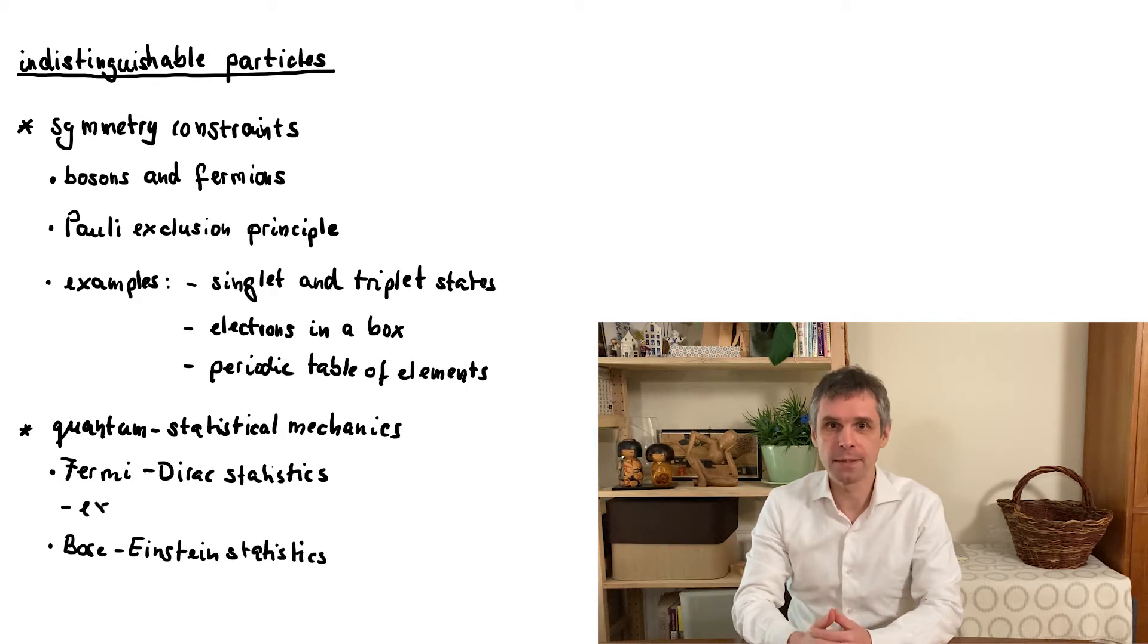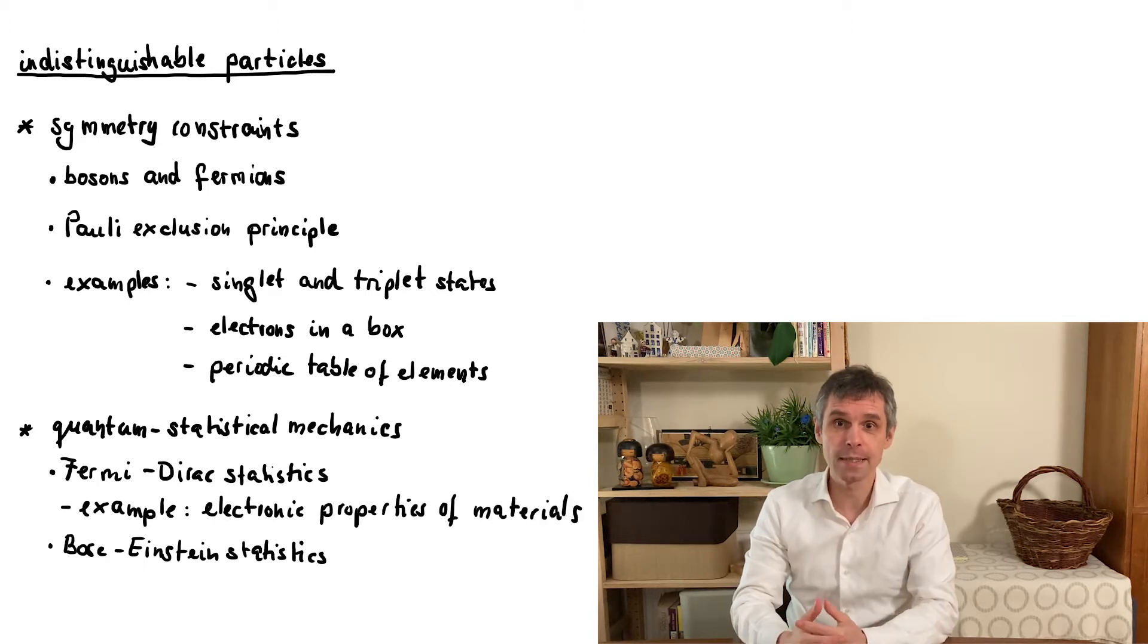We illustrate the Fermi-Dirac statistics for the example of electronic properties of solids. Bose-Einstein statistics plays a role in many exciting quantum effects, such as Bose-Einstein condensation, superfluidity and superconductivity. And we will have a brief look at the simple mechanism for this.